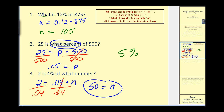Going back to number two: twenty-five is five percent of five hundred — it makes sense that twenty-five is a small percent of this larger number. And back to number one: what is twelve percent of eight hundred seventy-five? It seems reasonable that one hundred five is a small percent of this large number.